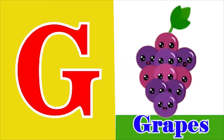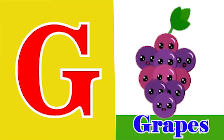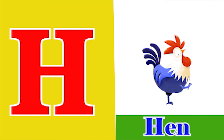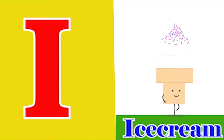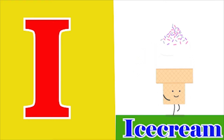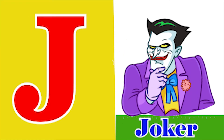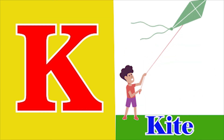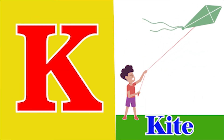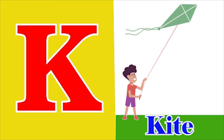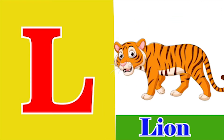G for apes, H for hen, I for ice cream, J for joker, K for kite.